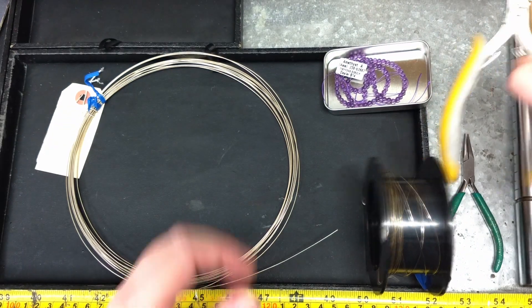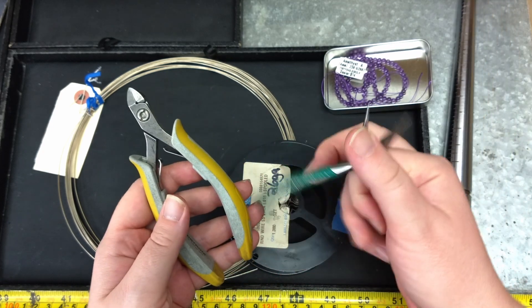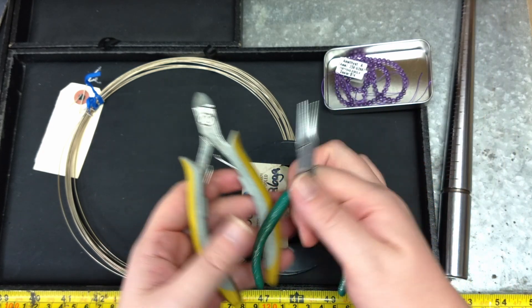The only tools required for this ring are wire cutters, flat chain nose pliers, and a ring mandrel.